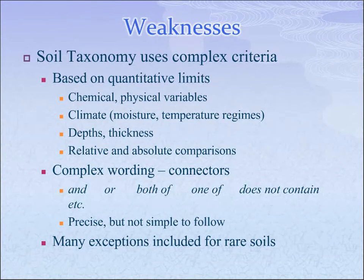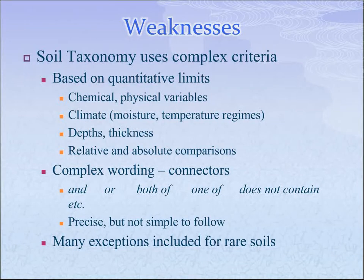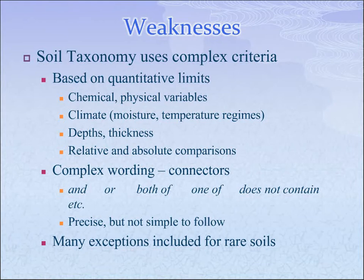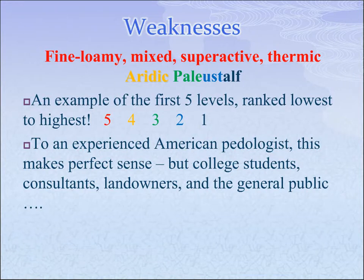Additionally, because it is a key system, it has very complex wording — 'and,' 'or,' 'both of,' 'neither of,' 'does not contain,' and so forth. These kinds of words make it rather complex to visualize what you're actually classifying. It's precise, but it's not easy to follow. There are also exceptions made within the taxonomic system for rare soils. And there is the matter of a very long taxonomic class name — for example: 'fine loamy mixed superactive thermic.'